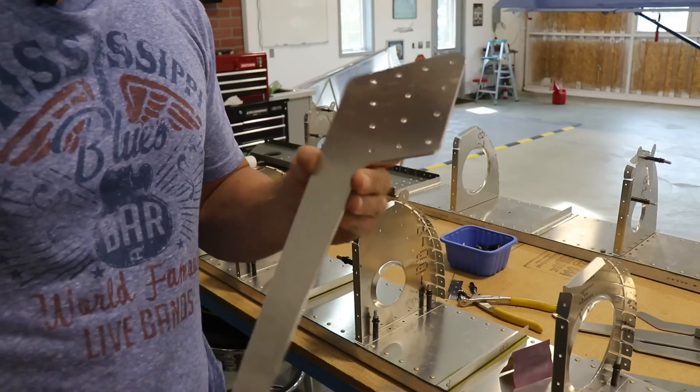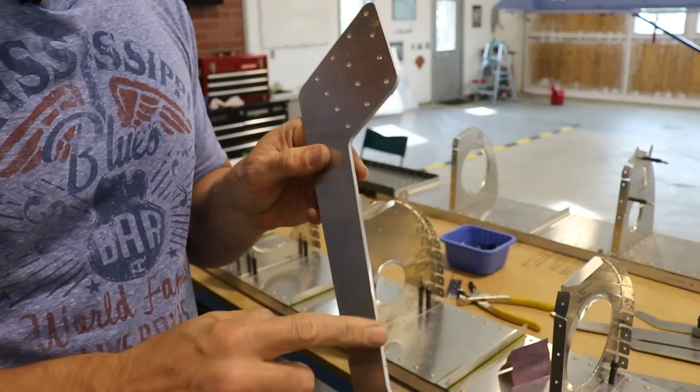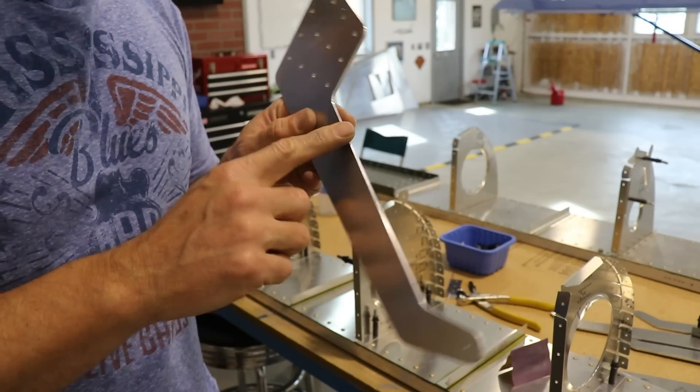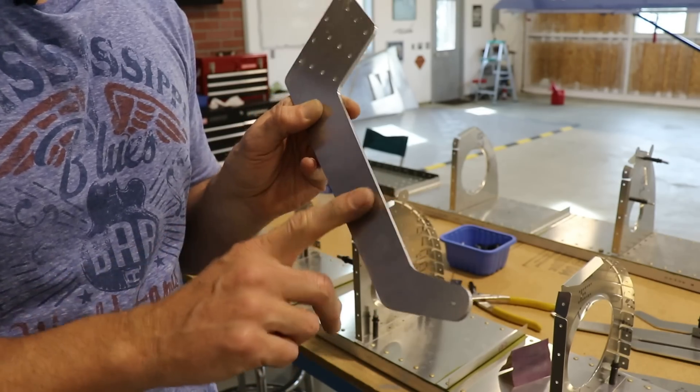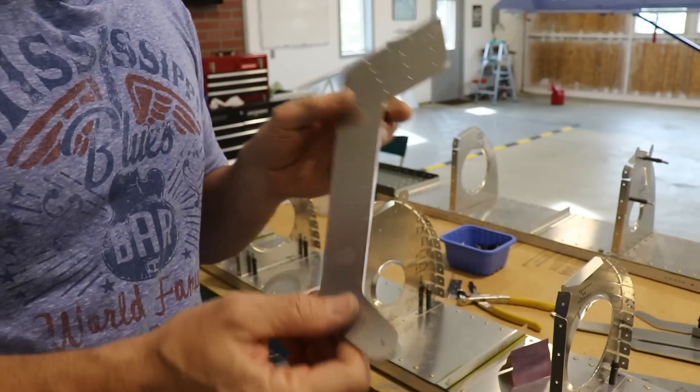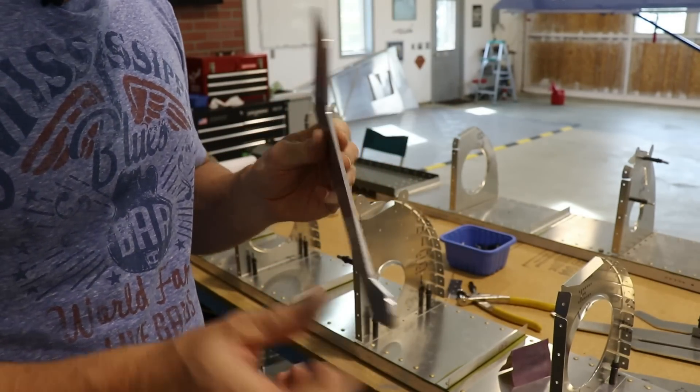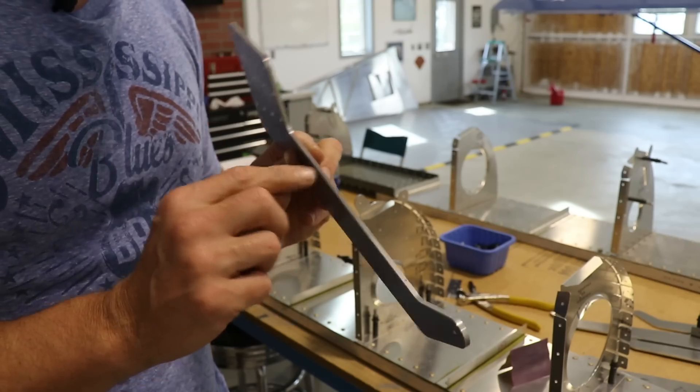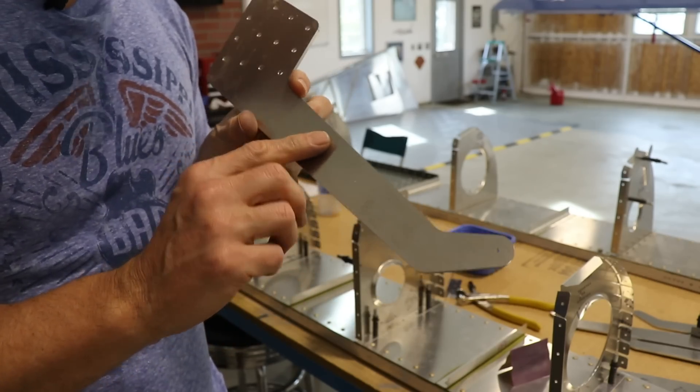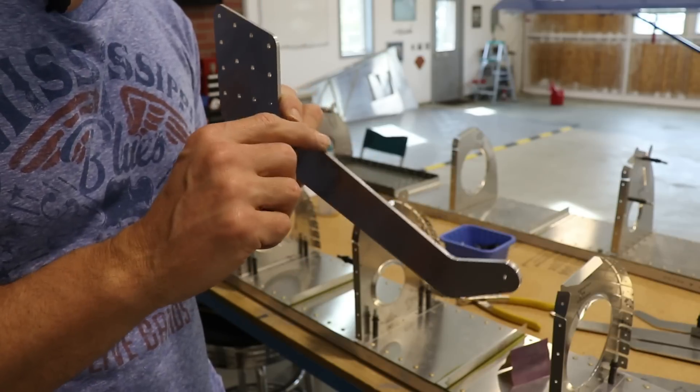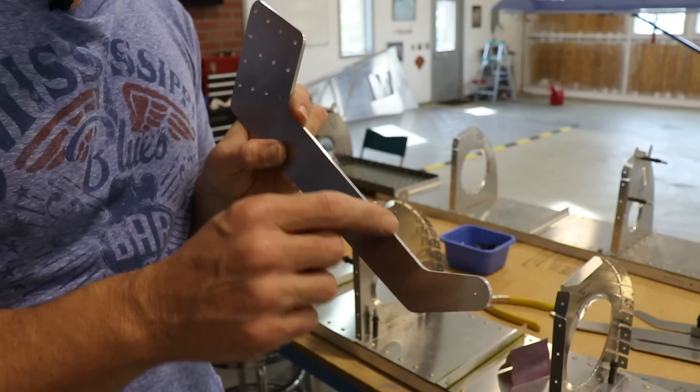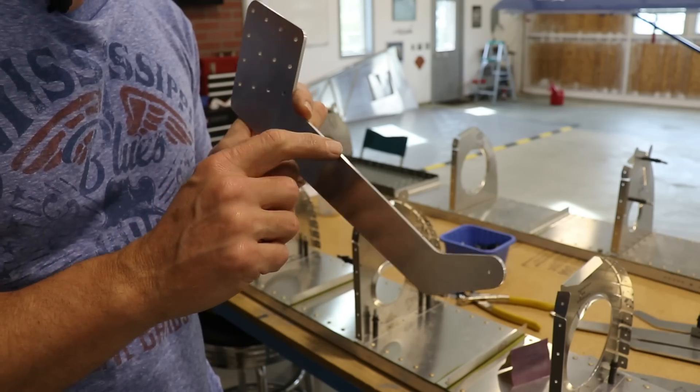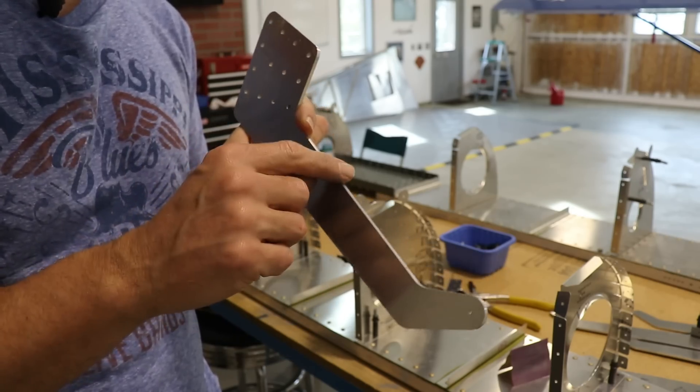If you take one of these flapperon brackets in your hand, go ahead and run your fingers along the edge, but do it carefully because it is an extremely sharp edge. It's cut at exactly 90 degrees and there's really no problem with leaving it like that, but my theory is that if you're going to paint your airplane, paint does not want to go around a 90 degree corner like that, and I think it would be very easy for the paint to chip and break off.